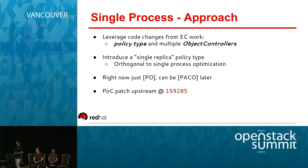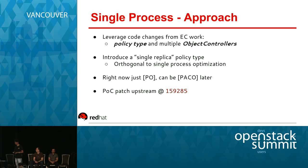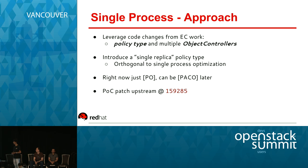In terms of implementation: erasure coding was beta in the Kilo release of Swift, bringing in new concepts such as policy type and multiple object controllers. Object controllers are the component that talks to the disk file API. As of today, there are two policy types: replication and erasure coding. The proposal is to introduce a single replica policy type that clustered file systems can make use of. The single process optimization, although tied to the single replica policy type in the reference implementation, need not be — you can still have three replicas with the single process optimization.